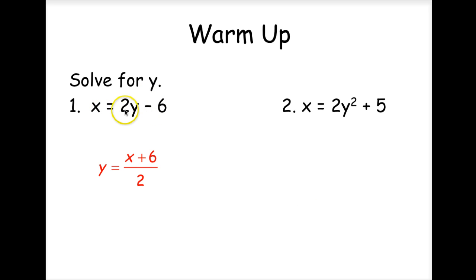This one you add 6 to both sides and divide both sides by 2 to solve for y. This one you're going to subtract 5 from both sides, divide both sides by 2, then take the square root. So plus or minus the square root of x minus 5 divided by 2.